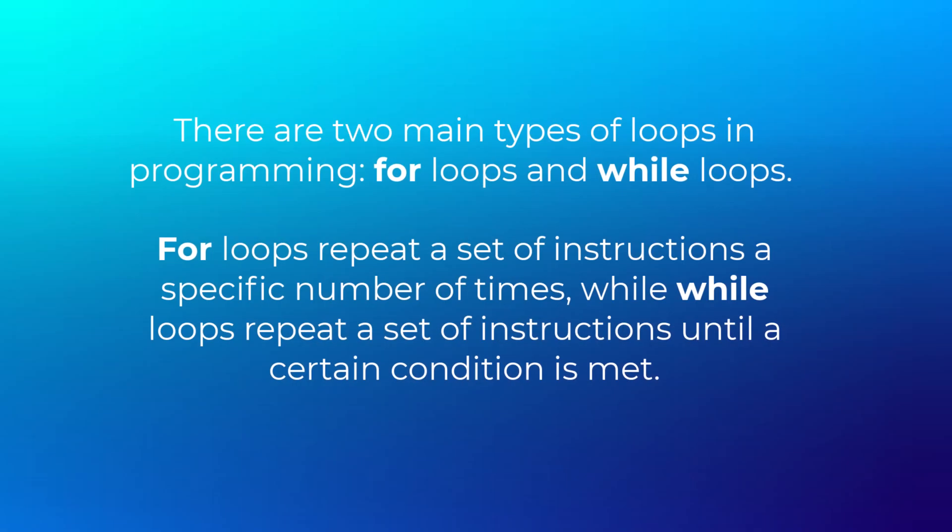There are two main types of loops in programming: for loops and while loops. For loops repeat a set of instructions a specific number of times, while while loops repeat a set of instructions until a certain condition is met.